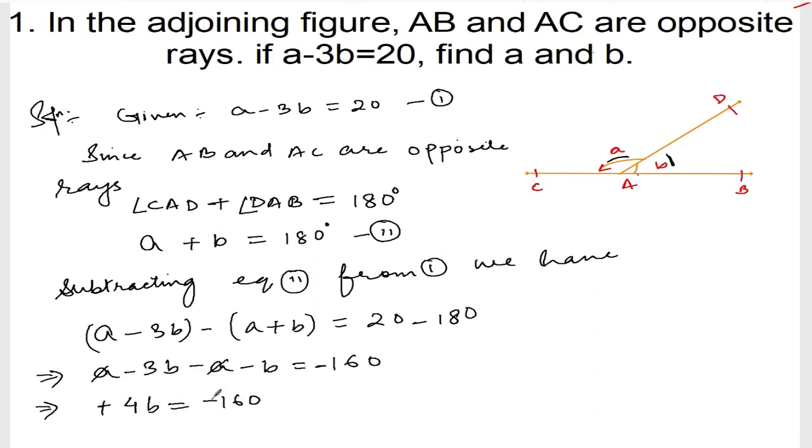Minus and minus cancel. So B is equal to 160 divided by 4. 4 into 16 is 16, 0 is 0. So it is B is equal to 40.